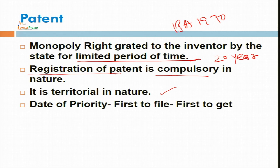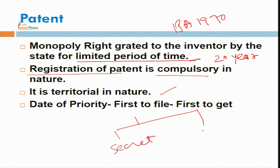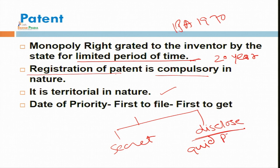If someone has invented a new thing in India, he has to go for registration, after which he will be entitled for that patent. He has two options: he can keep it secret or he can disclose that invention to the general public. For that disclosure, we will give him a monopoly right of 20 years on the basis of quid pro quo.